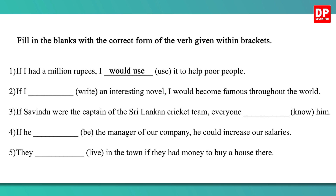Now look at the second one: If I blank write an interesting novel, I would become famous throughout the world. So here the blank is in the condition clause. In type 2 of the conditional sentences, in the condition clause, you have to write the verb in simple past tense. So the answer is: If I wrote an interesting novel, I would become famous throughout the world.